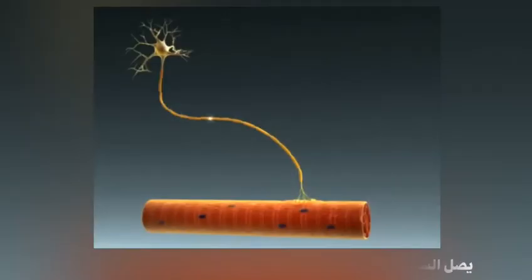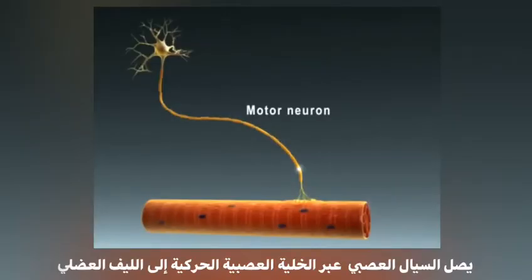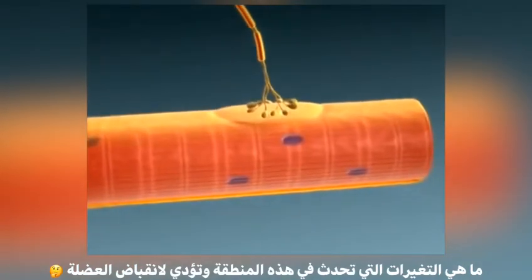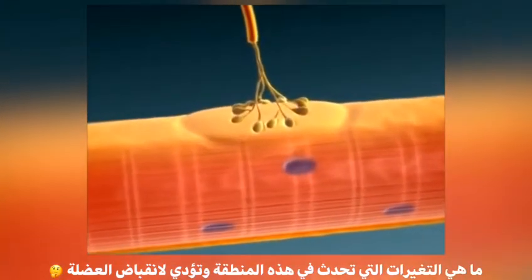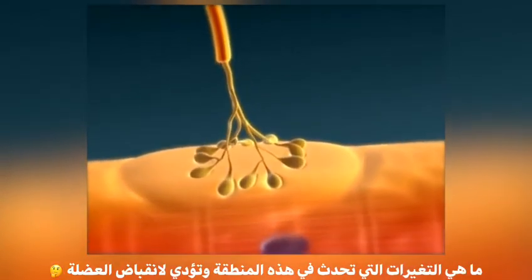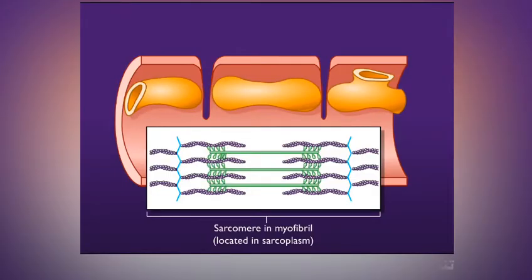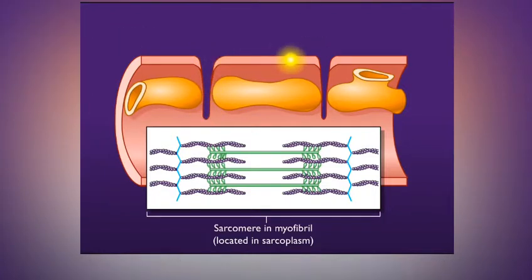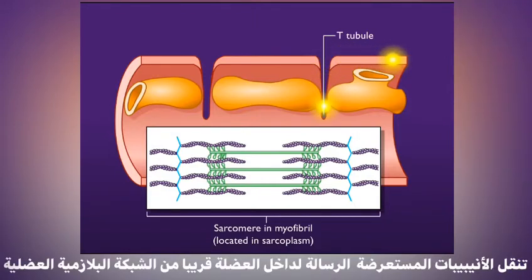An action potential propagates down a motor neuron to a skeletal muscle fiber. An action potential introduced at the neuromuscular junction is propagated along the sarcolemma of the skeletal muscle. At the T-tubule, the action potential is propagated on the T-tubule membrane into the interior of the muscle cell near the ends of the sarcoplasmic reticulum.